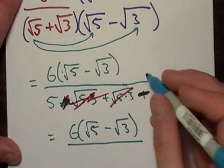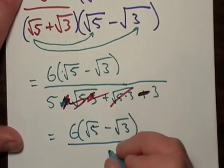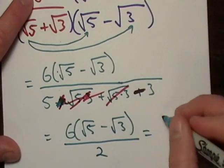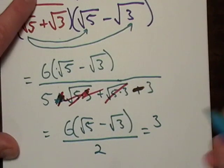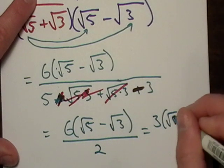The final answer is 5 minus 3, which is 2, and that's going to simplify down a little further. We'll get (√5 - √3) over 2.